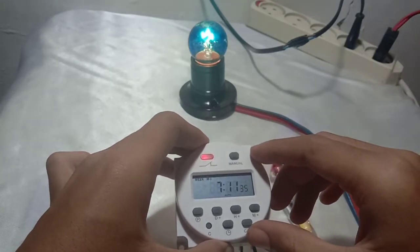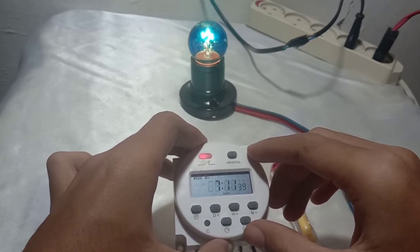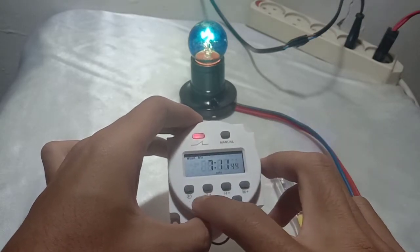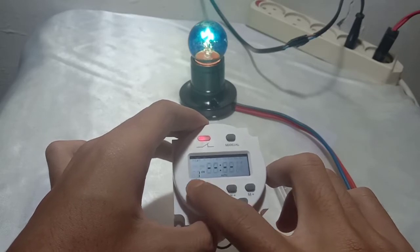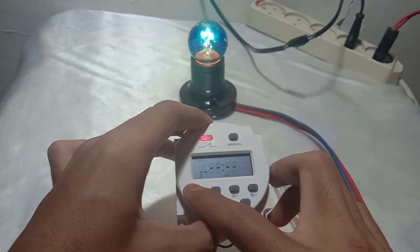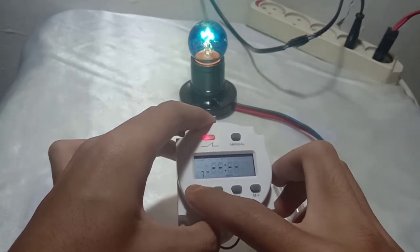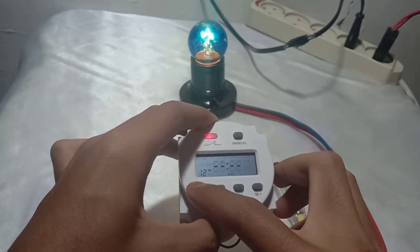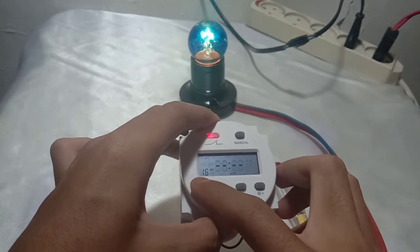And now we are going to take the auto. So this timer can be set for 16 times on-off, so it is very useful. Again, now we are going to set it. You can see, press P to set between on-off automatic. It can be set for 16 times.